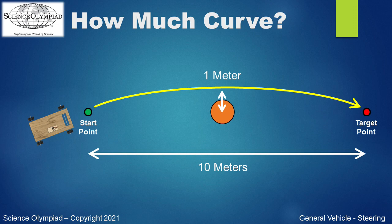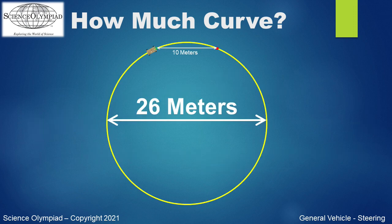How much do you think the front axle needs to rotate to travel this path? If the vehicle continued past the target point, the vehicle would travel in a complete circle. That circle would have a diameter of 26 meters. Not a small circle for a vehicle that is only 40 centimeters long. For comparison, that diameter is 65 times larger than the length of the vehicle.